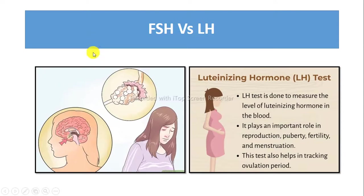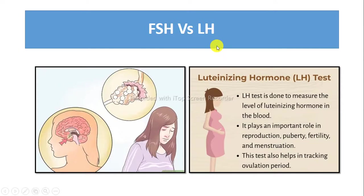FSH stimulates the growth of the ovarian follicle, whereas LH stimulates ovulation. FSH is involved in the development of primary sex organs, whereas LH has no role in the development of primary sex organs.